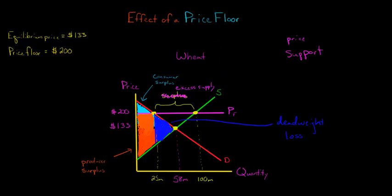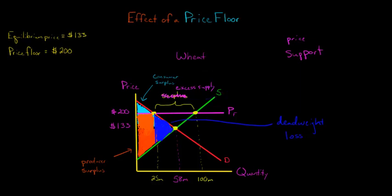The effect of this price floor on the wheat market — even though the government may have had good intentions in helping farmers by guaranteeing a price of $200 and making it illegal to sell below that — is that we've lost part of the total surplus triangle. We want to maximize total surplus, but now we're missing this dark blue portion. Total surplus has been reduced, and we have excess supply — extra wheat laying around.